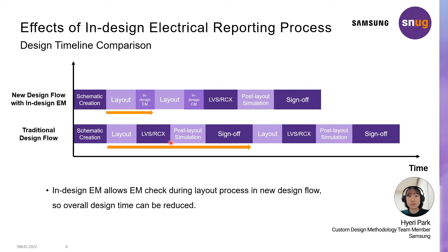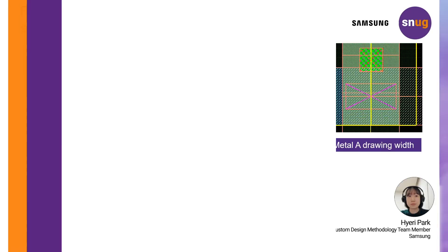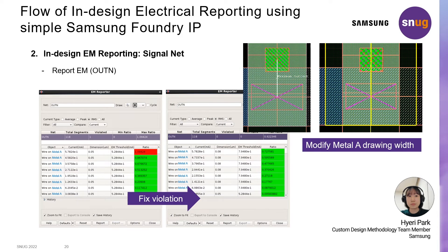In the traditional flow, you can see the iteration that returns to the layout in the sign-off stage. The time required to modify the layout is simply indicated by arrows, which can reduce the time required for LVS RCX post-layout simulation and sign-off.